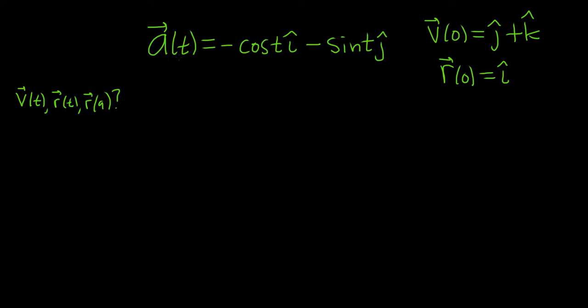In this problem, we're given the acceleration vector and two conditions, and we have to find the velocity, the position, and the position at t equals 9. So let's go ahead and work through this. Solution.